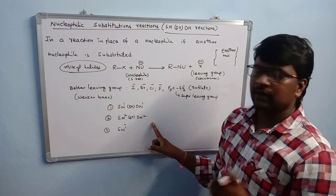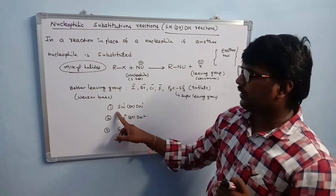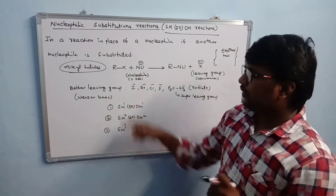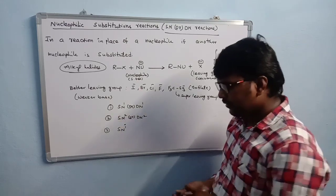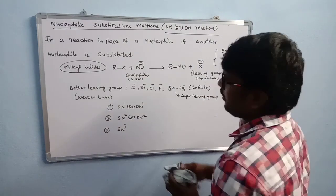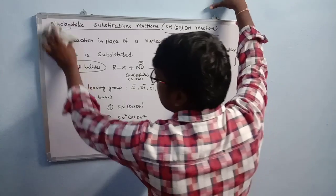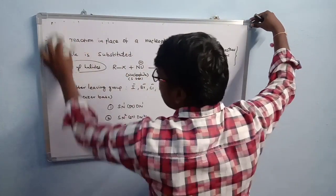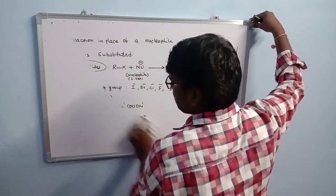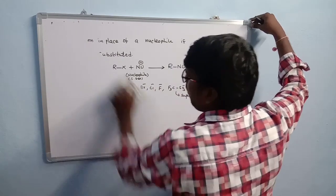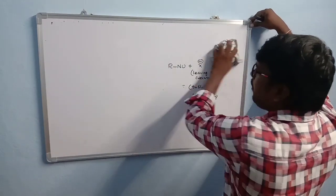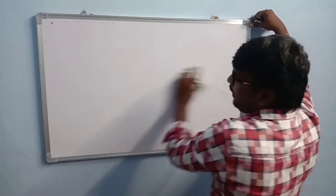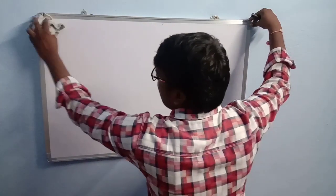These are the three nucleophilic substitution reactions: SN1, SN2, and SNi. In all of these, alkyl halides participate. Now we study the first type, the SN1 reaction. SN1 or DN1 indicates unimolecular — the number 1 indicates the molecularity of the reaction, meaning it is unimolecular.